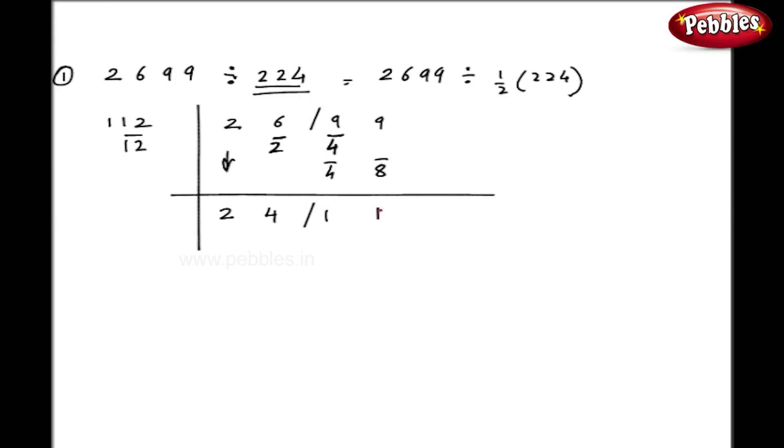Now as in right hand side I got 11. While using Anurupiena method, I divided by 2. So to my left hand side also I will divide by 2. So 24 by 2 my left hand side and 11 my right hand side. So my final answer becomes 1211.